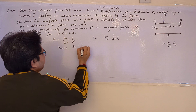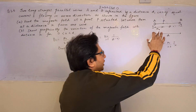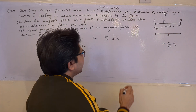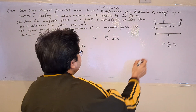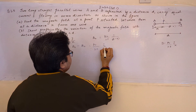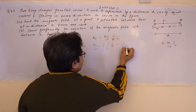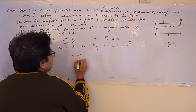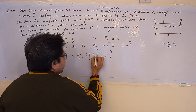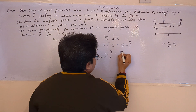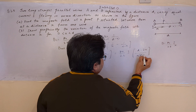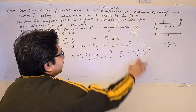No specific values of x, d, or d minus x are provided, so we cannot predict which field is larger in magnitude. The net field is B1 minus B2 = μ₀/2π × i × (1/x − 1/(d−x)). Taking the LCM as x(d−x), we get μ₀/2π × i × (d−2x) / [x(d−x)]. This is the result for Part A — the magnetic field at point P.